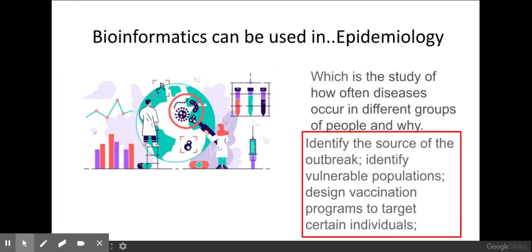Bioinformatics can also be used for epidemiology. It allows you to compare the DNA sequence of new bacteria, viruses, or fungi causing a disease with other known DNA sequences and structures. As a result, you can identify the source of outbreaks, identify vulnerable populations that may be more susceptible to a certain disease, and target vaccination programs to those individuals — because comparing DNA sequences reveals what a virus or bacteria is more likely to target within a person's genome.